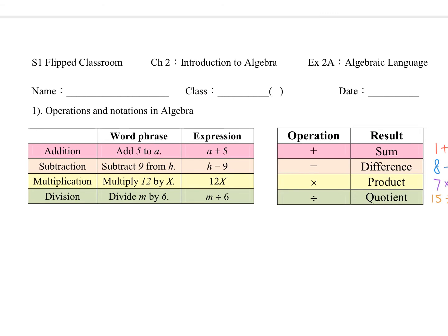Up to now, we learned 4 operations. They are addition, subtraction, multiplication, and division. The corresponding results we call sum, difference, product, and quotient. I hope you can remember it well.